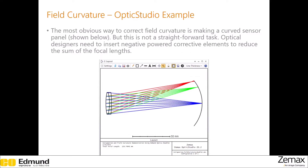To correct field curvature, you can use a curved sensor surface, but sensors with a curved surface are not very common. So what you can do is place a negative lens close to the image plane to make the rays focus on the flat image plane. These are called field flatteners.